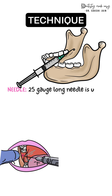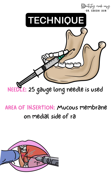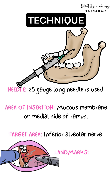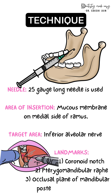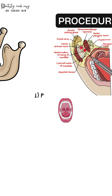For the technique, a 25-gauge long needle is recommended and preferred. The area of injection is in the mucous membrane on the medial side of the ramus. The target area is the inferior alveolar nerve itself, before it enters the mandibular foramen. The three major landmarks are: the coronoid notch (the greatest concavity on the anterior border of the ramus), the pterygomandibular raphe, and the occlusal plane of the mandibular posterior teeth.